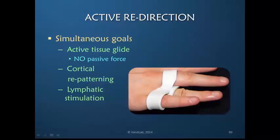Active redirection gives you simultaneous goals of active tissue glide and differential tissue glide. Not only is the PIP joint extending but it's also flexing. There's differential movement one direction and then returning, there's differential movement the other direction. And there is absolutely no passive range of motion. This active redirection allows cortical repatterning so the patient relearns to actually move the stiff joint instead of avoiding it.